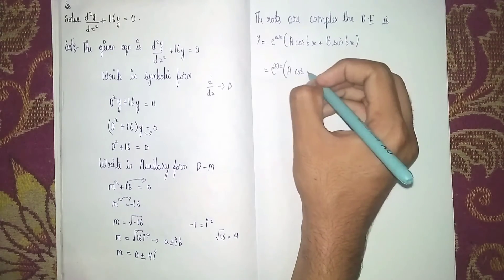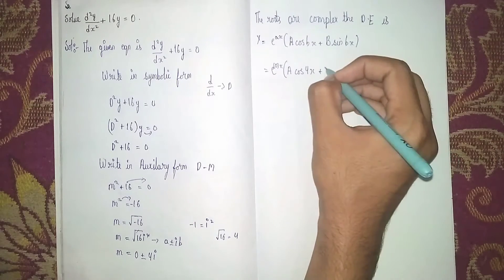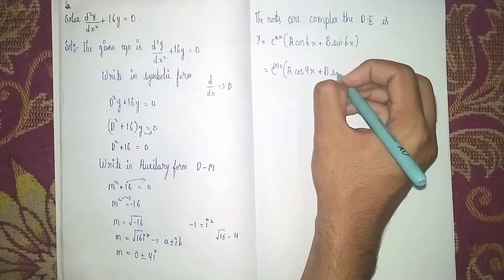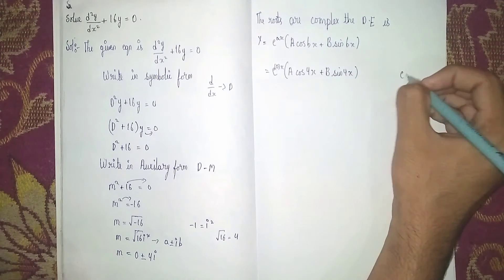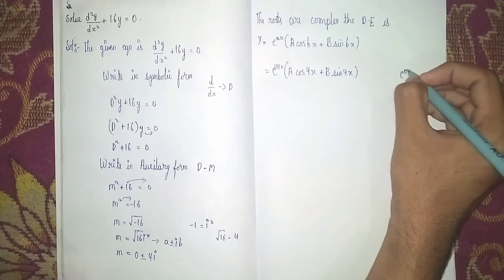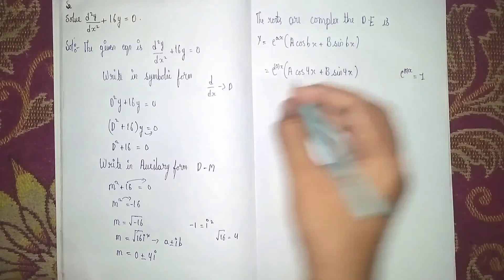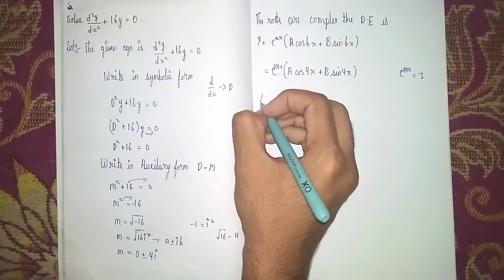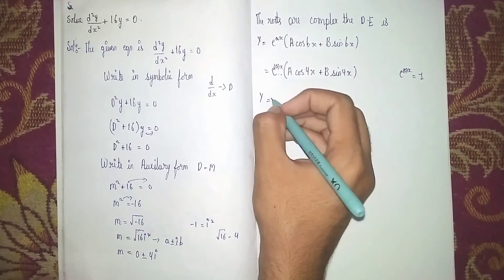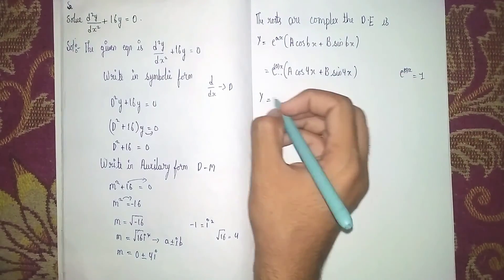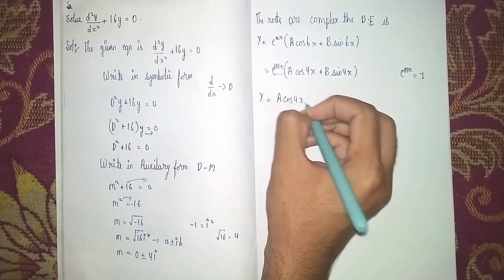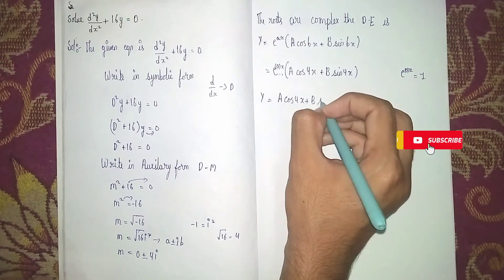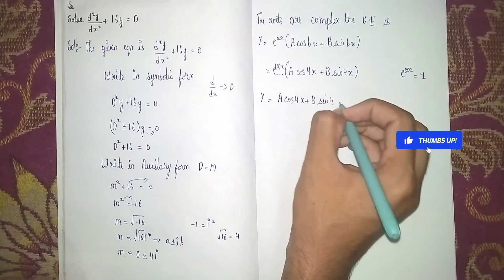Now e power 0x is equal to 1, so here it is multiplying with 1. So at last, our general solution is the differential equation: a cos 4x plus b sine 4x. This is our answer.